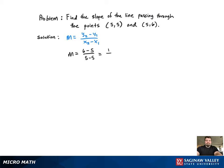Plugging it in, we get m equal to 1 over 0, which is undefined — 0 in the denominator. And the graph is provided below.